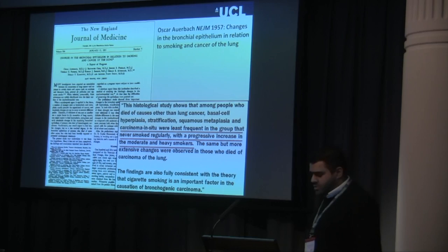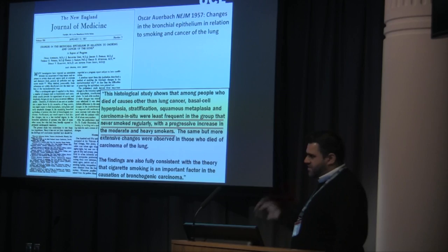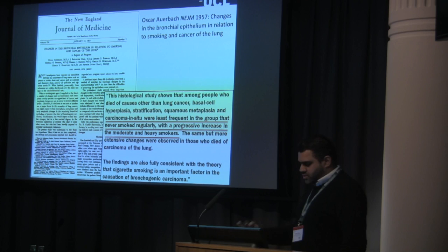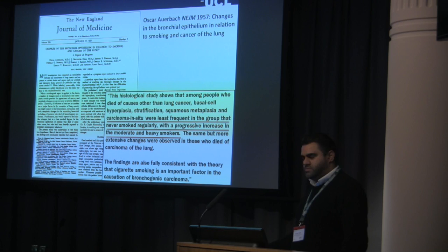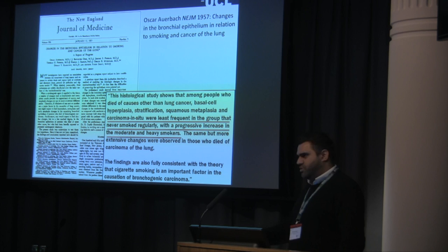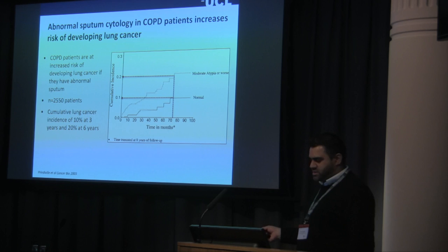This all came about from Orbach, who in the 1950s did post-mortem examinations of the epithelium. He found very distinct lesions within the airway, calling them either carcinoma in situ or dysplasia, and found them in a very high proportion in patients who smoked and patients who had lung cancer. He was the first to really describe this causal relationship between smoking, pre-invasive disease, and lung cancer.